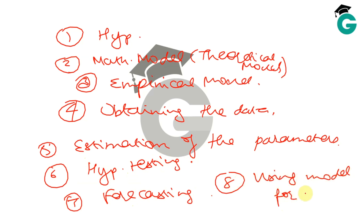We are a long way from the policy step, but any econometric exercise goes through all these steps. In your textbook there is an example of the econometric model of consumption — I suggest going over it yourself. Note that concepts like forecasting, prediction, and hypothesis testing appear in that chapter of Gujarati, but those will be covered in Unit 2 of our syllabus.